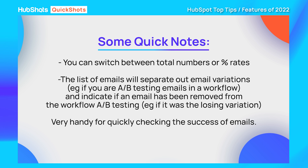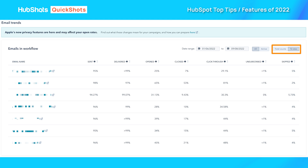If an email was a loser, it'll tell you it's been removed and only the winning variation continues on. Very handy — I don't think a lot of people use this or know about it, so just a reminder about the performance tab. One thing I noticed on that screenshot is that it actually has a column for 'skip,' which must indicate which emails are being skipped in the workflow.